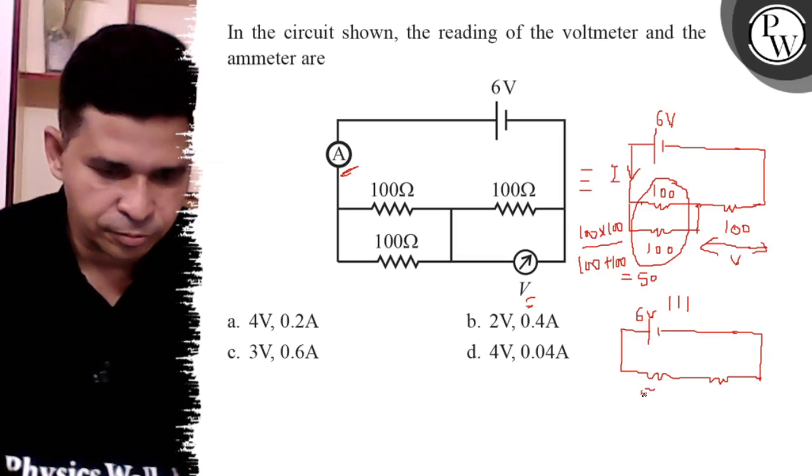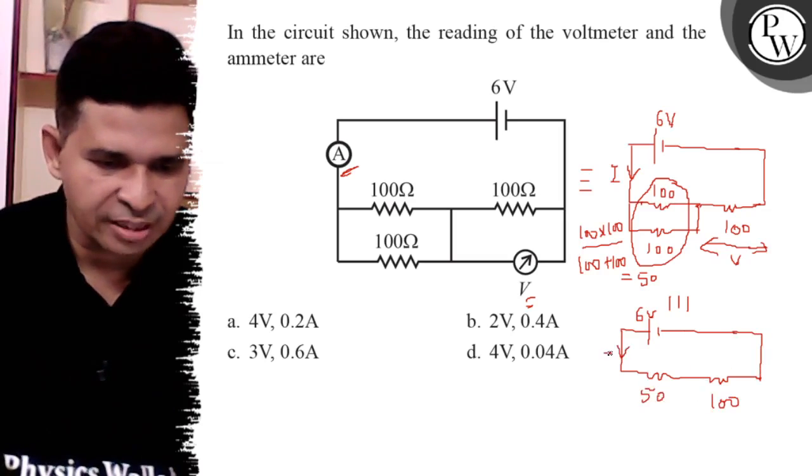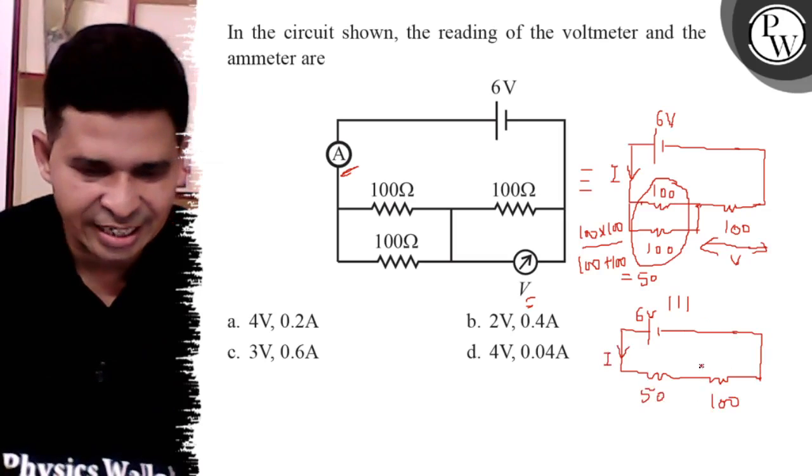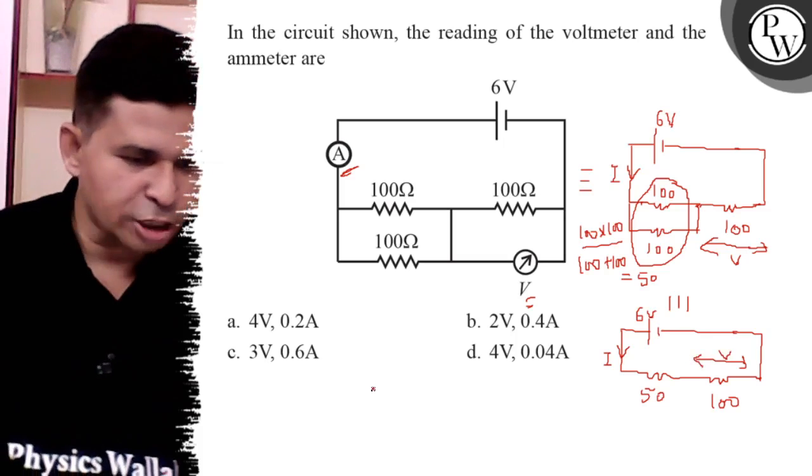This is 100 ohm, and we have to determine the value of I in that circuit, and here voltmeter reading is V. So first find the I.